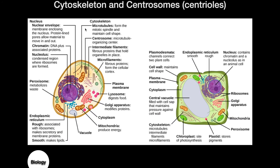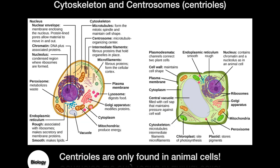A couple of other organelles: the cytoskeleton and the centrosomes. The cytoskeleton is made up of proteins used for cell support, giving the cell structure and definition. The centrosomes, or centrioles, are only found in animal cells and aid in cell division. Both plant and animal cells undergo cell division, but only animal cells have centrioles.